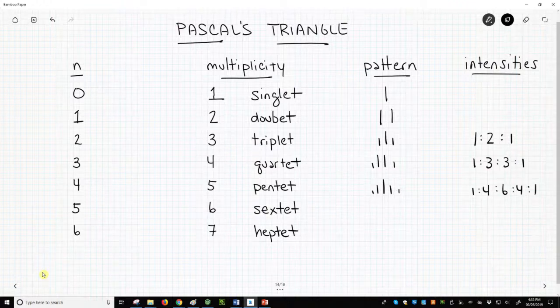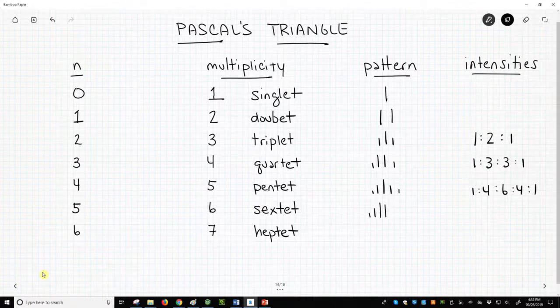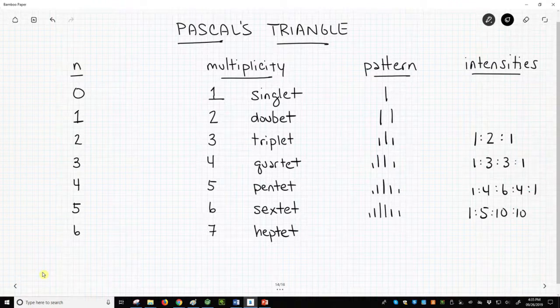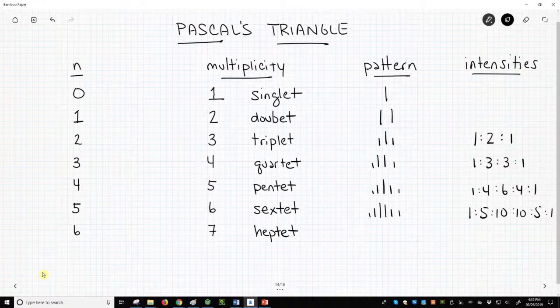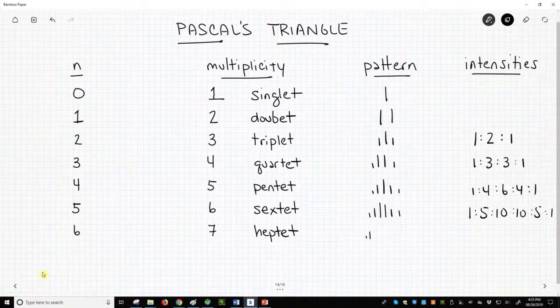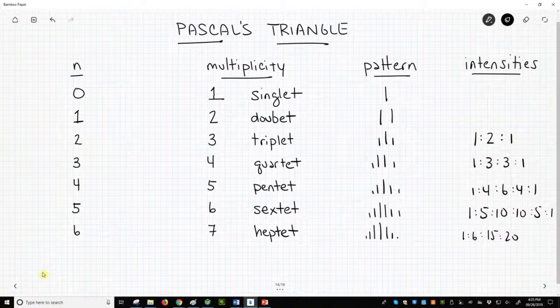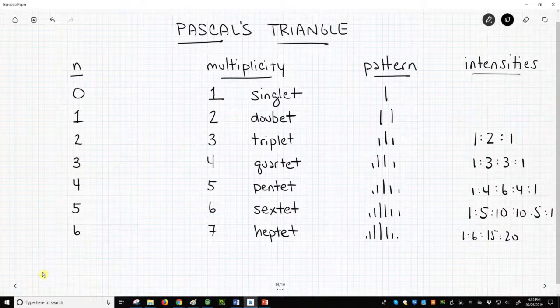The sextet, the intensities are 1 to 5 to 10 to 10 to 5 to 1. The heptet has 7 lines, and these get really difficult to draw in a meaningful way. It is 1 to 6 to 15 to 20, then 15, 6, and 1 going back down.